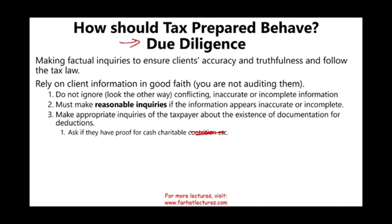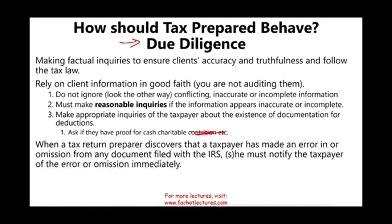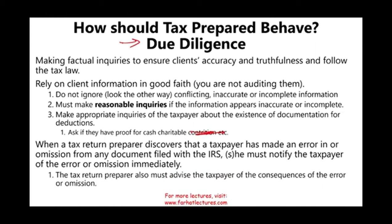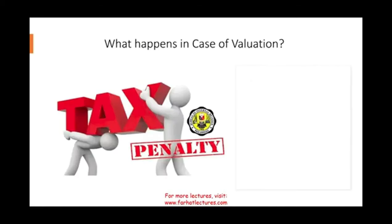When you discover that a taxpayer made an error or omission from any document filed with the IRS, you must let them know about the error or omission immediately and inform them of the consequences — as discussed in Circular 230. Tax preparers must follow this due diligence.